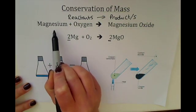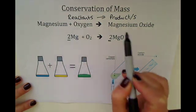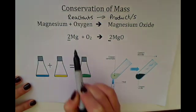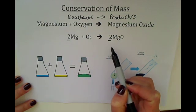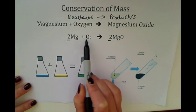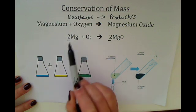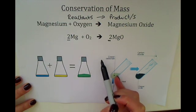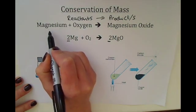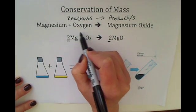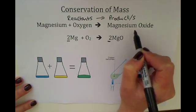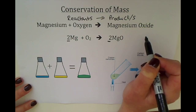Here we have an example of magnesium plus oxygen making magnesium oxide. The reason why we balance the equation is to ensure that there are no atoms gained or lost in the chemical reaction. In the same way, an amount of magnesium reacting with an amount of oxygen must total the amount of magnesium oxide made.